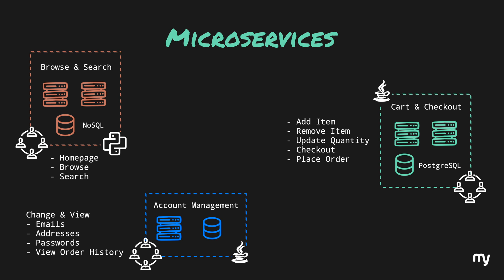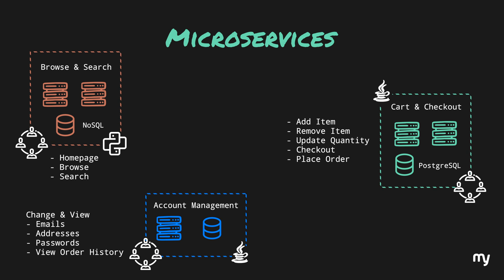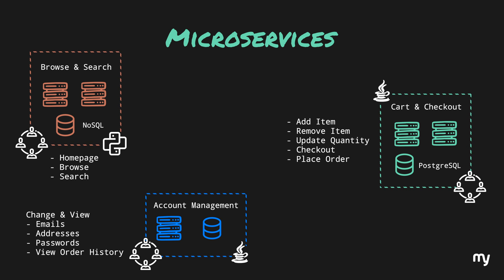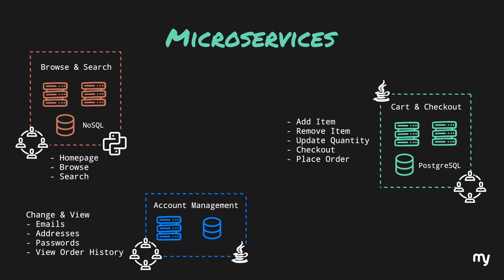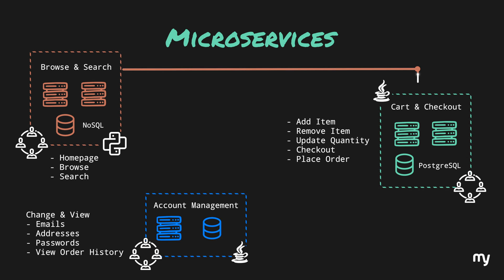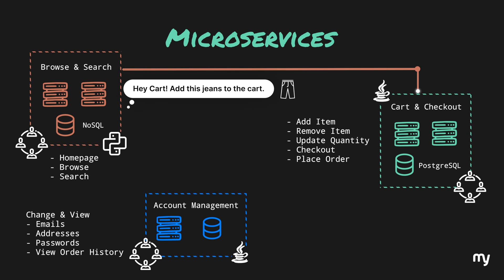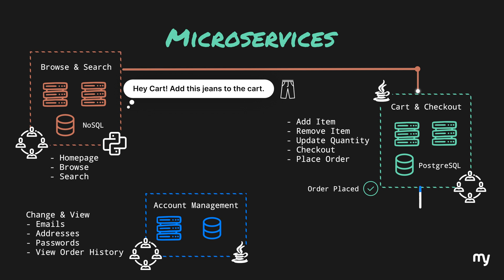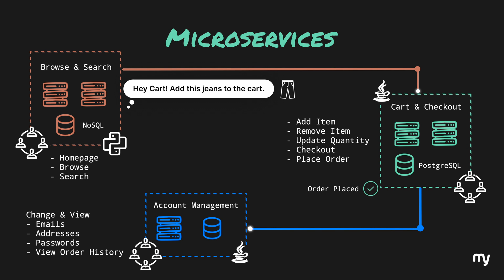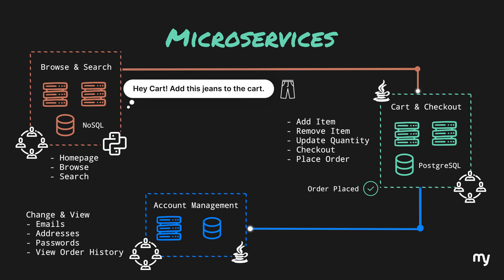Separating all these services is great, but how will they communicate with each other? For example, a person browsing something wants to add an item to the cart and buy it. In a monolith this was easy because everything shared the same codebase. But now that the services are separated, how will the browse service tell the cart service to add an item? And once the user places the order, how will that order appear in the order history? There has to be some sort of communication between these microservices so they can talk to each other and delegate responsibility when needed.